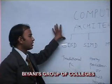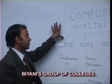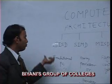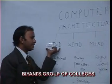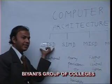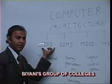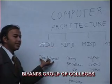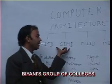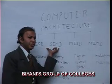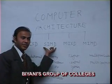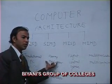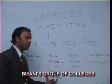According to Flynn's taxonomy, computer architecture can be categorized into four categories. First is SISD — Single Instruction, Single Data stream — which includes the traditional PC. Second is SIMD — Single Instruction, Multiple Data stream — which includes array processors or graphics processors.